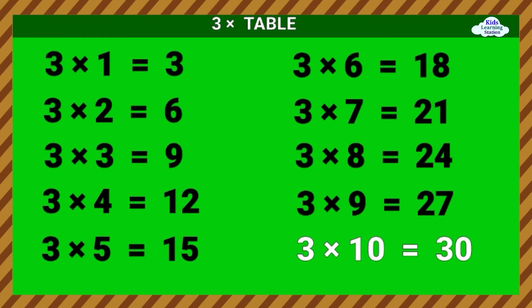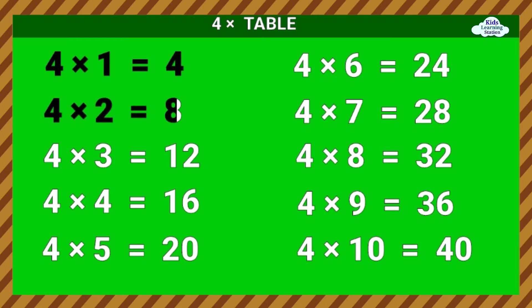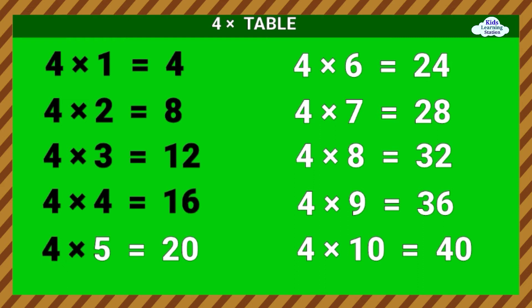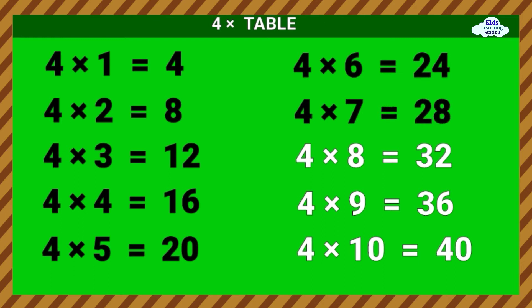3 times 9 equals 27. 3 times 10 equals 30. Four times table. 4 times 7 equals 28. 4 times 8 equals 32.